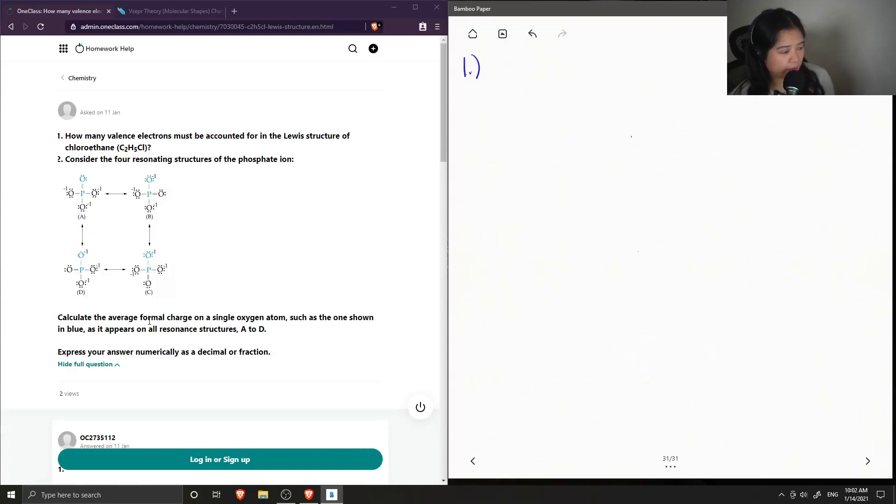Calculate the average formal charge on a single oxygen atom, such as the one shown in blue, as it appears on all resonance structures. Express your answer numerically as a decimal or fraction.